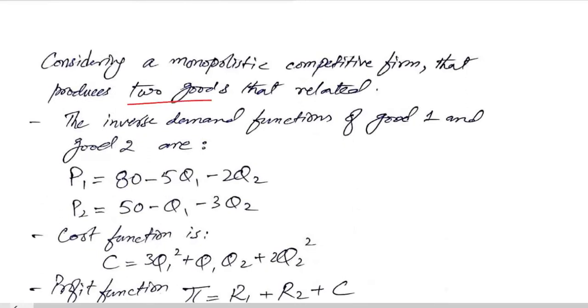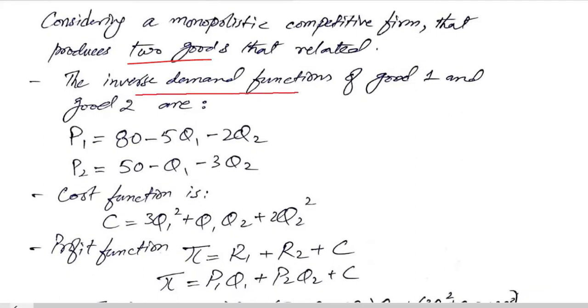So there are two related goods, and if they are related goods, their inverse demand functions will be composed of the outputs of both.